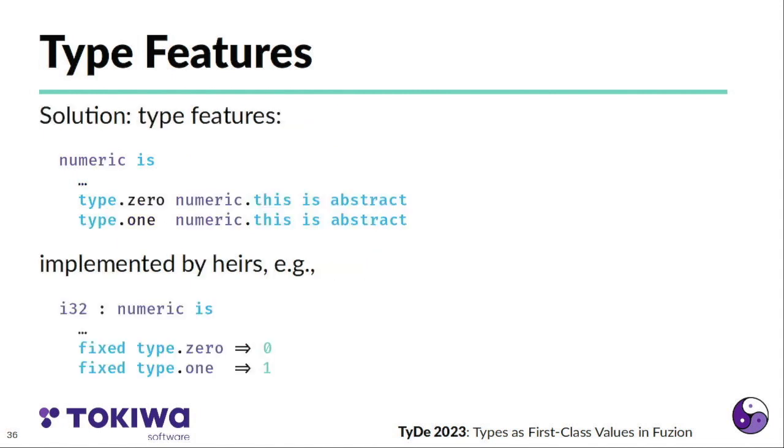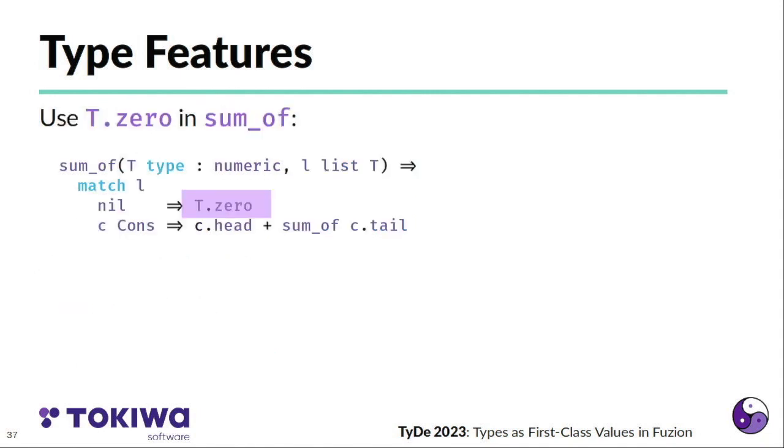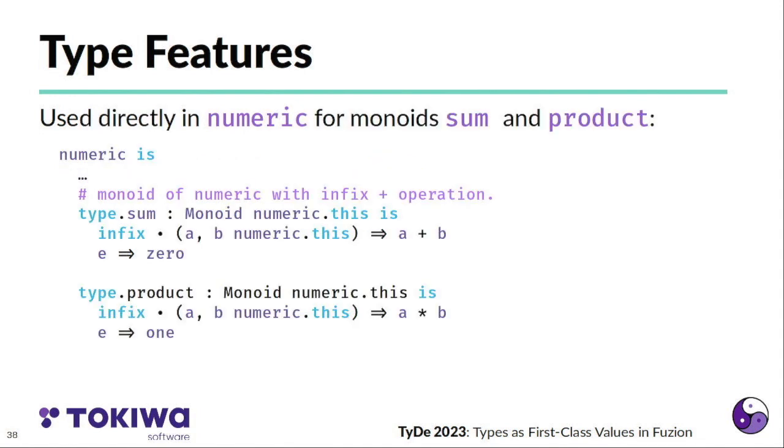And the solution in Fuzion is that the feature numeric defines what we call type features for zero and one that provide a value of the underlying type. And they are declared abstract because in numeric we don't know what the zero value is right now. And concrete numeric implementations like I32 then provide implementations for zero and one that in this case just returns the zero or one constants. And with this, in our implementation of sum of, we can use t.0 to get the value of zero in the actual numeric type that was given to this feature.